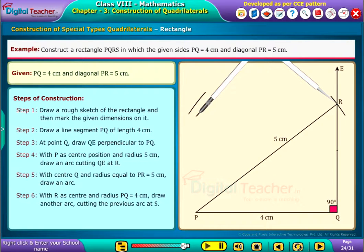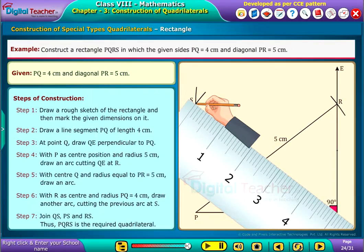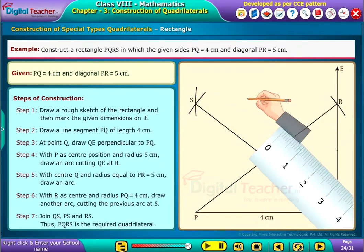Step 6: With R as center and radius PQ equals 4 centimeters, draw another arc cutting the previous arc at S. Step 7: Join QS, PS, and RS.